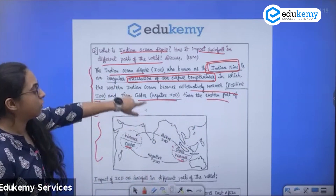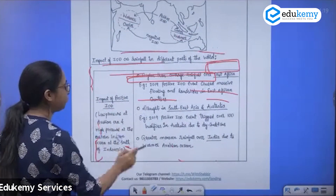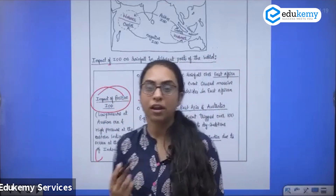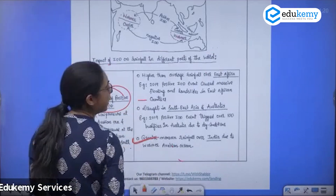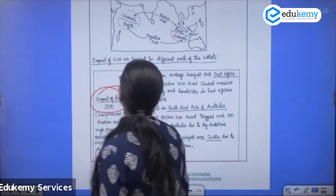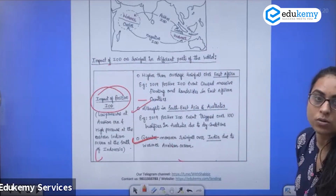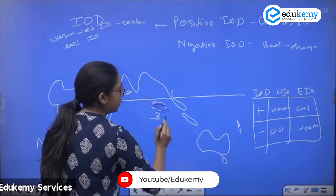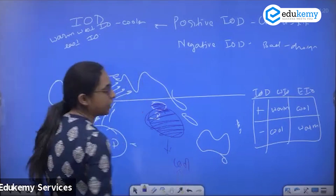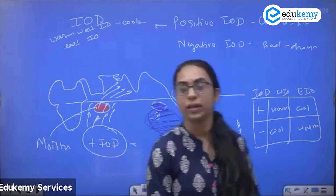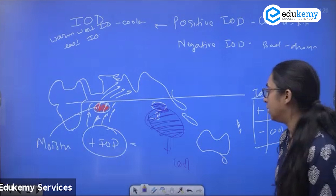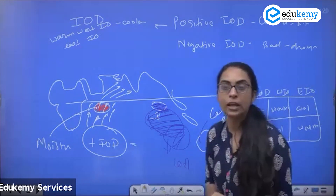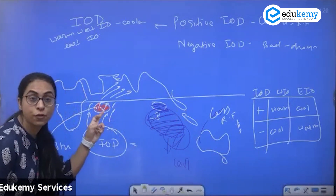You can show this on a world map. In positive IOD, there is more rainfall in India and droughts in Southeast Asia. Because the eastern Indian Ocean is cool, winds cannot pick up moisture from there, so Australia and Southeast Asia receive less rainfall.